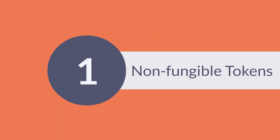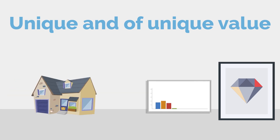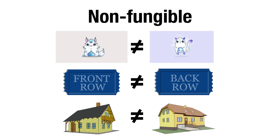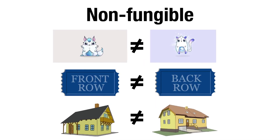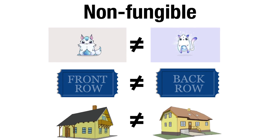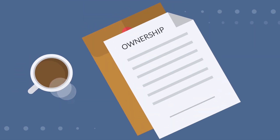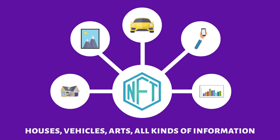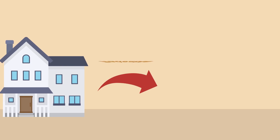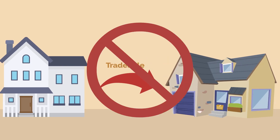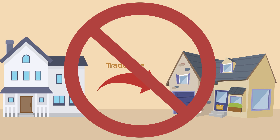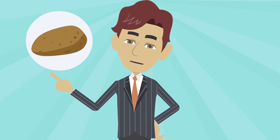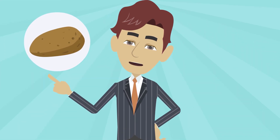To understand how it does this, we need to understand non-fungible tokens — NFTs — and smart contracts. NFTs are a special type of token, essentially a digital unit which represents something unique and of unique value, meaning they are not necessarily interchangeable just by their token status alone. To cut through the jargon, NFTs are usually used to prove ownership — this could be houses, vehicles, art, all kinds of information, and really anything. One house isn't necessarily tradable for another, as each house is unique and will have a unique value.